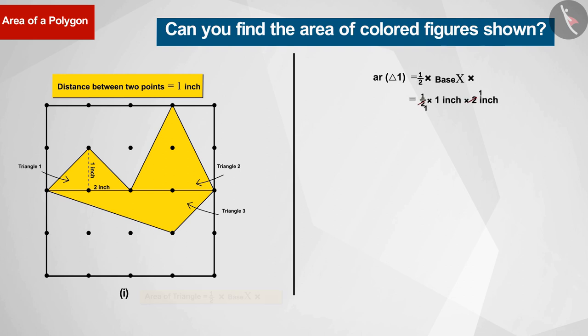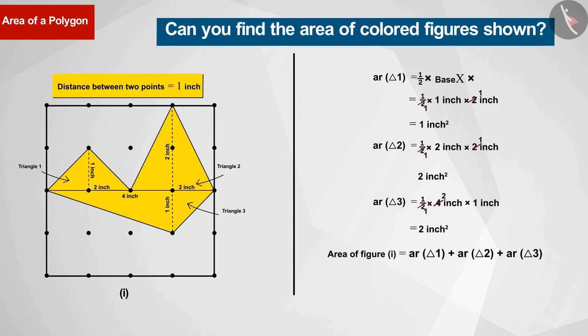Similarly, we find the height of triangles 2 and 3 and the length of the base, and then their areas can be determined. As a result, after the sum of areas, we get the area of the first figure, which is 5 square inches.